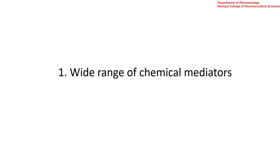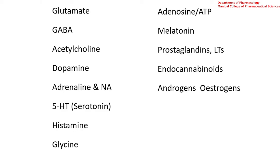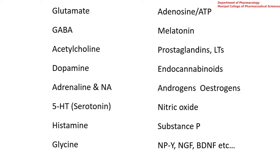The first reason is there are a wide range of chemical mediators in the central nervous system. These include glutamate, GABA, acetylcholine, dopamine, adrenaline and noradrenaline, 5-hydroxytryptamine or serotonin, histamine, glycine, adenosine, melatonin, prostaglandins, leukotrienes, endocannabinoids, androgens, estrogens, nitric oxide, substance P, neuropeptide Y, and brain-derived neurotrophic factor, among others. This is just the tip of an iceberg — there are large numbers of neurotransmitters, neuromodulators, and co-transmitters in the central nervous system.